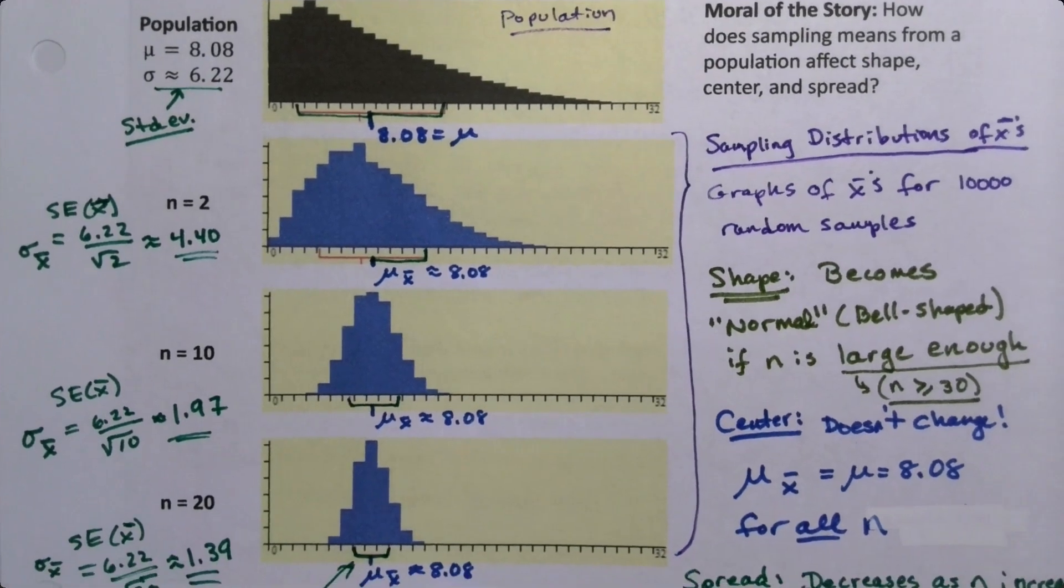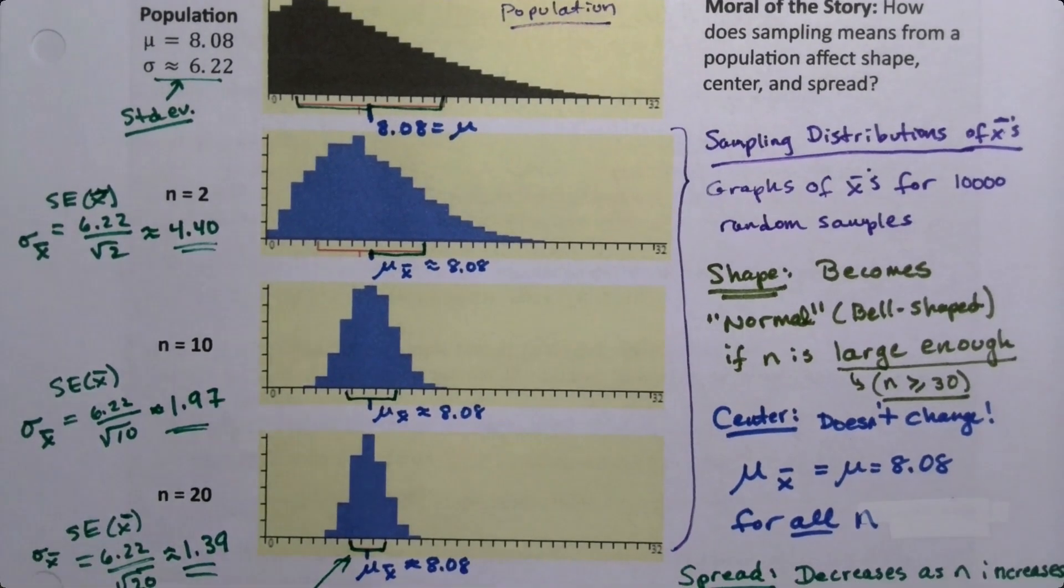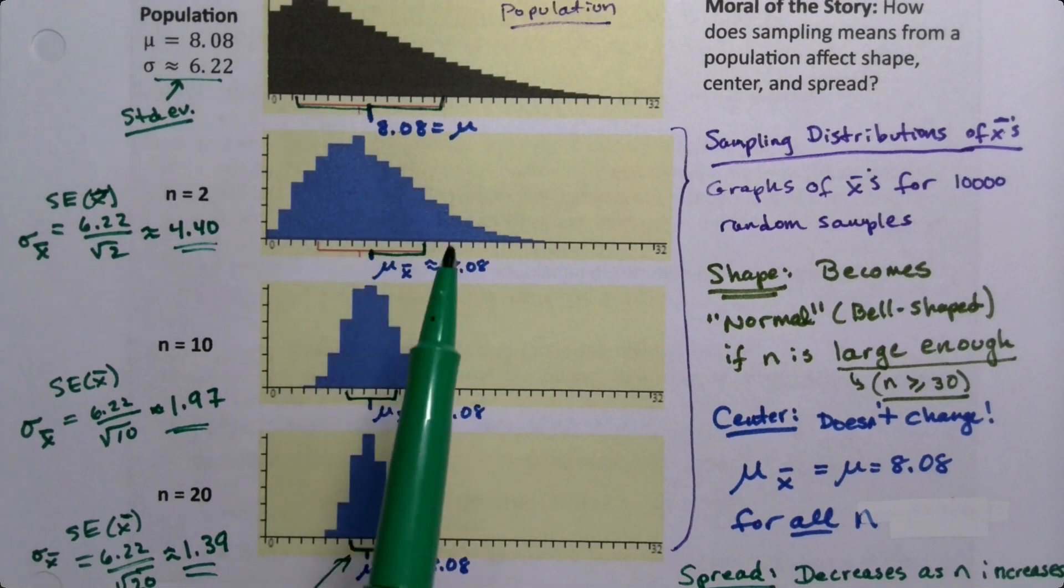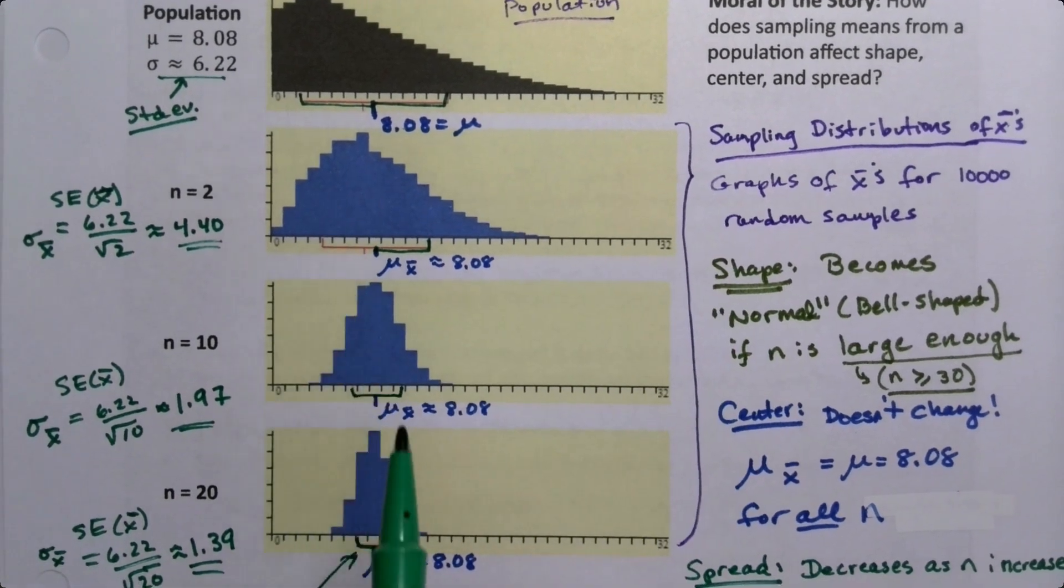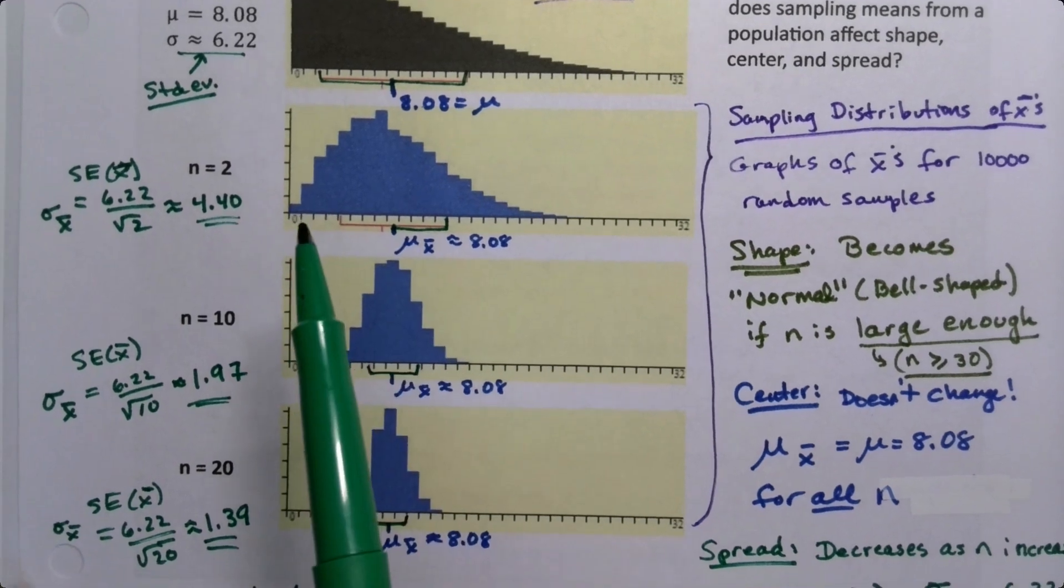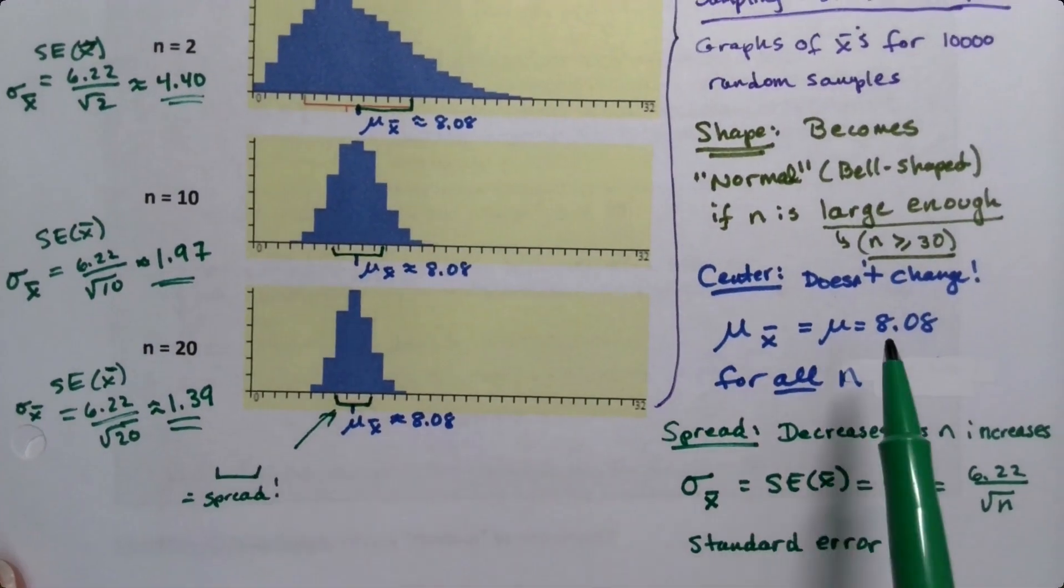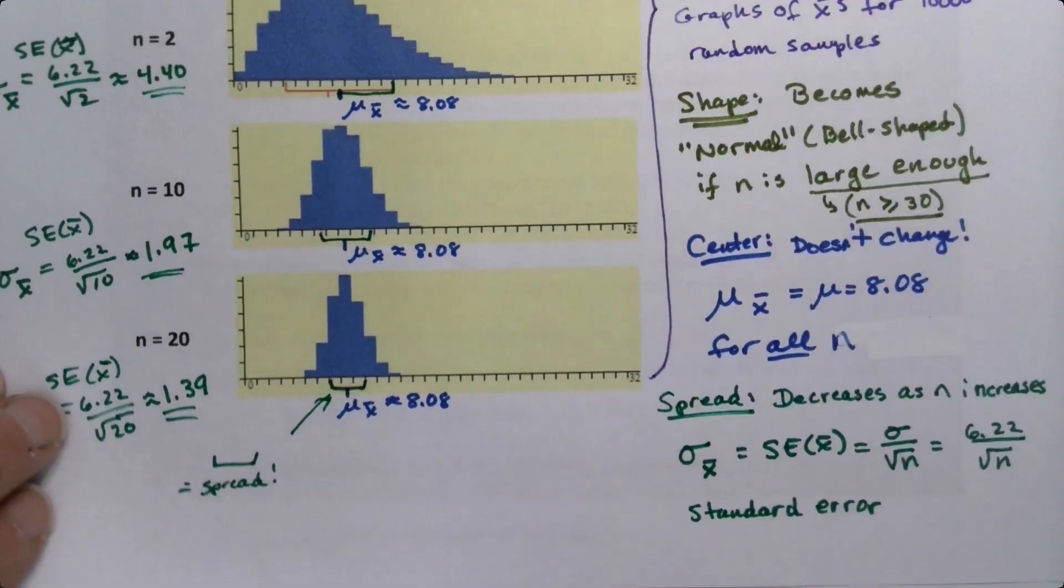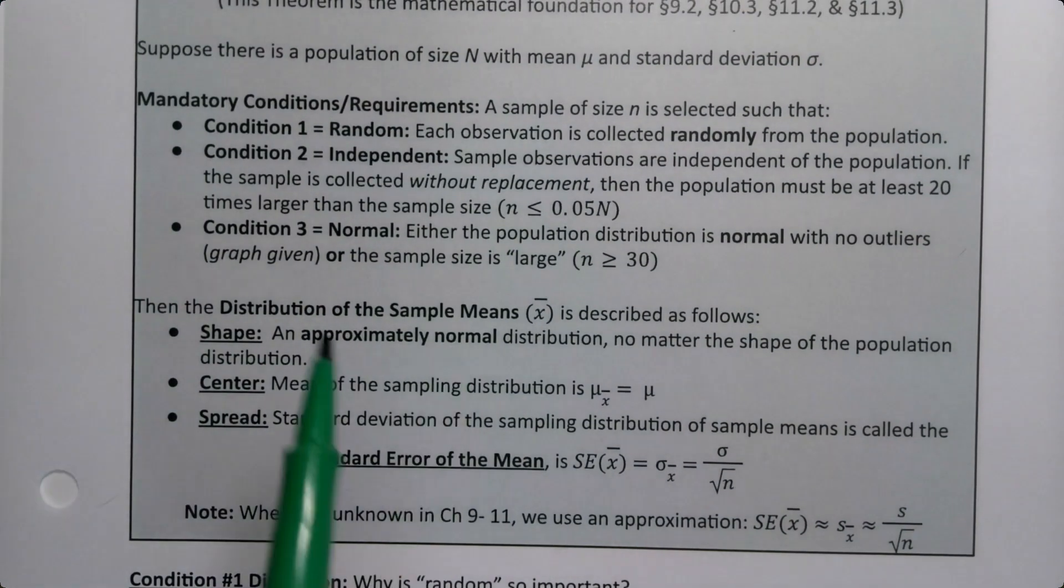We see these powerful relationships happening in sampling distributions for x-bars. We can see that their shape is becoming normal, their centers are always staying the same, and their spread shrinks as the sample size gets larger. That leads us back to the central limit theorem, and these are the three outcomes of the central limit theorem.